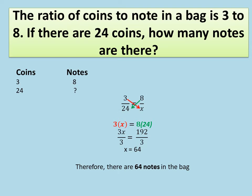Since the notes have 8 parts versus the coins which only have 3 parts, the number of notes in the bag has to be more than the number of coins. So the ratio of coins to notes, if we write the exact values, would be 24 to 64 — we simply reduced the ratio to its simplest form. If you have not watched the video on simplifying fractions, I suggest you go back and watch it.